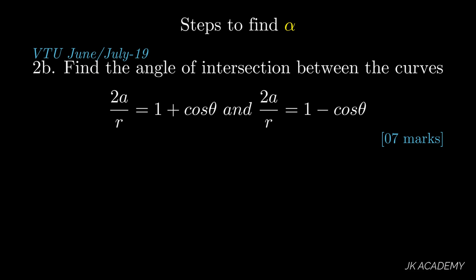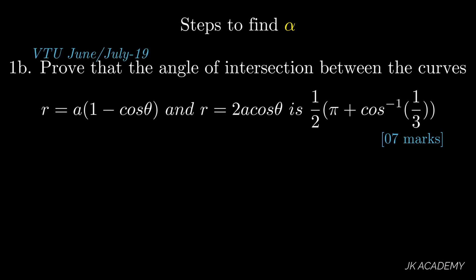In this question they ask you to find the angle between two curves: 2a/r = 1 + cosθ and 2a/r = 1 − cosθ. Another VTU question from June/July 2019 asks you to prove that the angle between r = a(1 − cosθ) and r = 2a cosθ is (1/2)(π + cos⁻¹(1/3)).